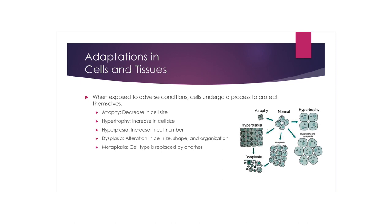Hyperplasia is where you get an increase in the actual number of cells, and that could be due to cancer. Early stages of cancer include hyperplasia; in fact, a lot of cancers have to do with the inability to control the increase in the number of cells. Hyperplasia has to do with the number.